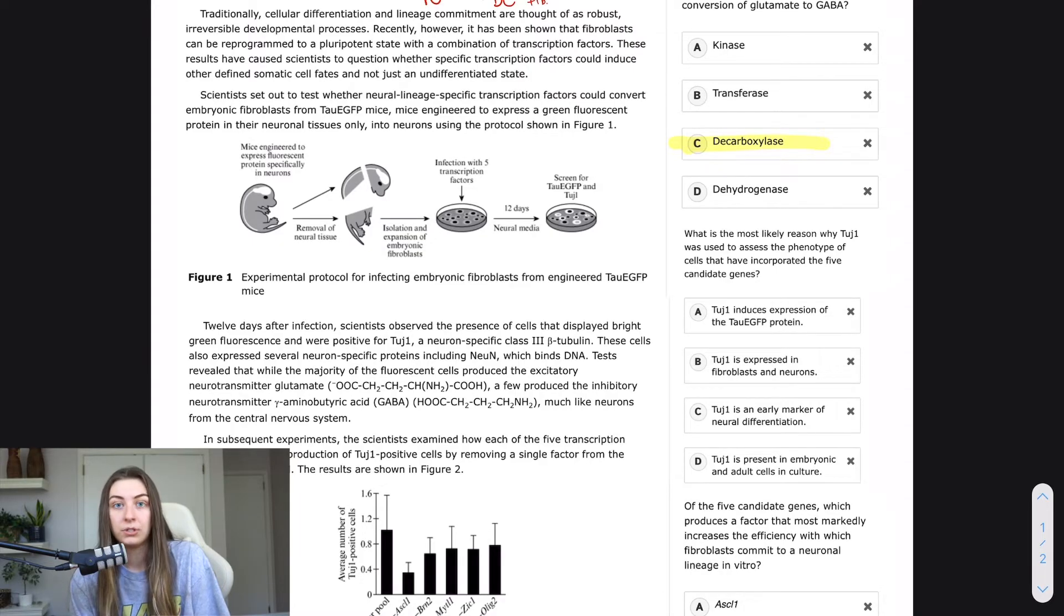But in this case, they just added the word fibroblasts, which makes this totally wrong. Imagine how could they tell if they've taken their experiment from fibroblasts to neurons by measuring TOOGE1, if it was expressed in fibroblasts and neurons. It's not true. It doesn't make sense. So B's not right.